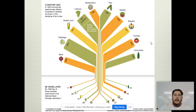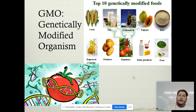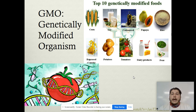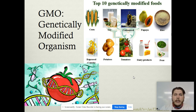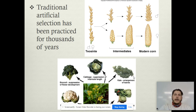This transitions us into GMOs — the genetically modified organism. Our top 10 genetically modified foods, and you'll have an assignment on Thursday looking at one of these: corn, soy, cottonseed, papaya, rice, canola oil or rapeseed, potatoes, tomatoes, lots of dairy products, and peas. Those are our top 10 genetically modified foods.